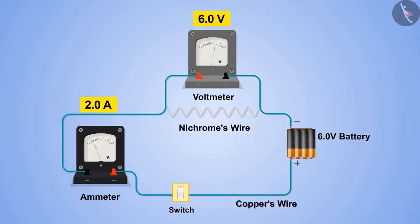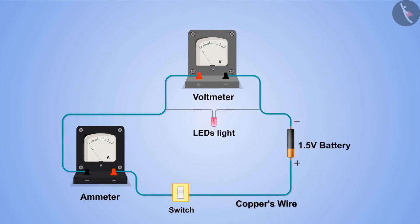What will happen if the nichrome wire is replaced by another resistance, say an LEDs light? Will the ratio still be the same as it was in the case of a nichrome wire? Let's try this. Here the value of electric current has changed due to LED light.